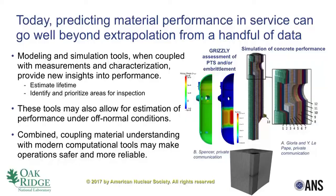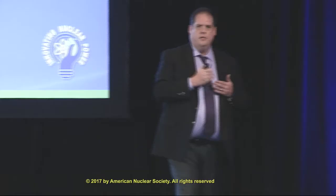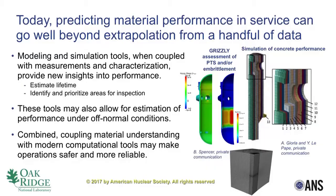Shown in the center is the Grizzly Assessment Tool, developed by Ben Spencer and his team at Idaho National Laboratory — the same approach for the reactor pressure vessel. What's shown is a quarter section of the vessel in two different conditions. It takes well-established relations for radiation embrittlement, simulates them over space and time, and we can now see which areas are most susceptible to embrittlement. Then you take that mechanical and material understanding and simulate performance under accident conditions — in this case pressurized thermal shock, showing hoop stress — to identify the most susceptible areas and target evaluations and surveillance. By coupling these tools we can make operations safer, more efficient, and more reliable.